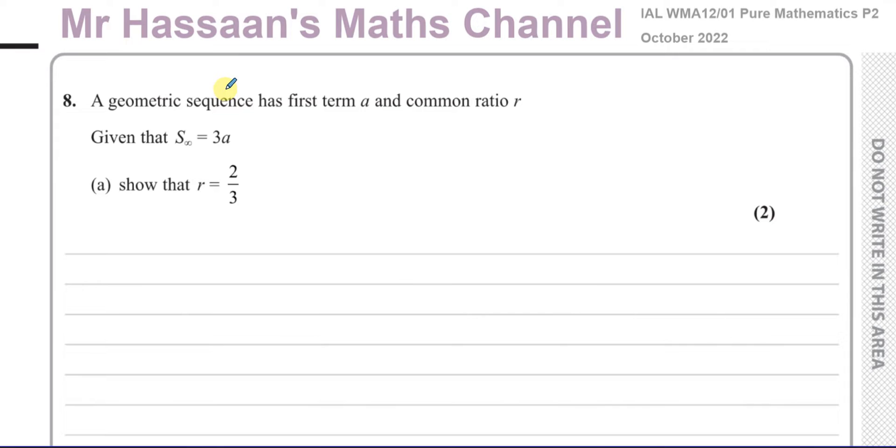This question is about geometric sequences. We're told that the geometric sequence has a first term A and a common ratio R, and that given the sum to infinity of this sequence is equal to 3A, show that R equals two-thirds.